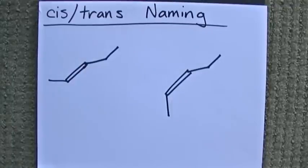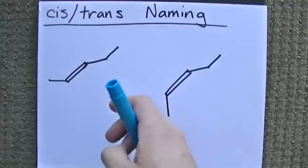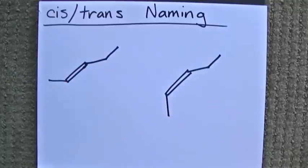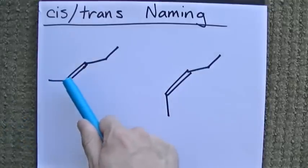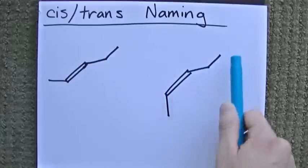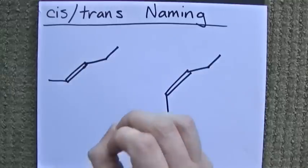Hey guys. When you're naming alkenes, that is, carbon chains with double bonds between two of the carbons, an interesting thing comes out. Here we have five carbon chains. One, two, three, four, five. One, two, three, four, five. So they're both pentenes.